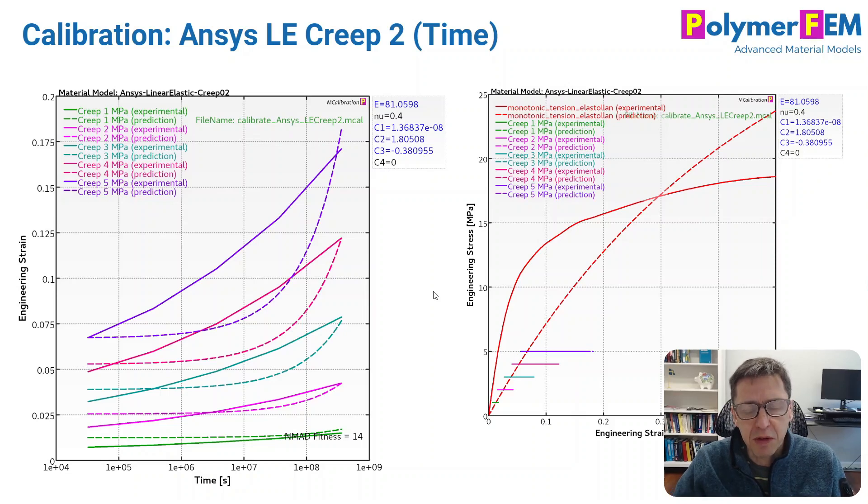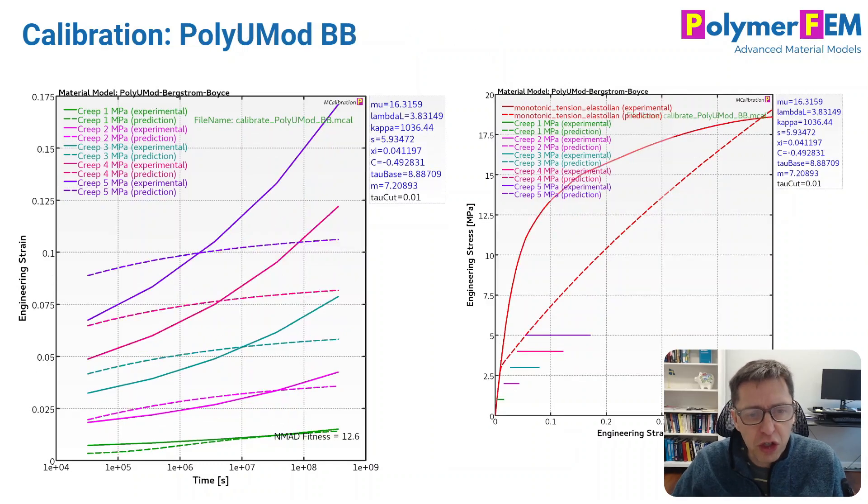The other creep model that sometimes people use is a time-based creep model. I don't like those so much, but if you apply it in this case, it doesn't work that well either. I haven't been able to match the data that well for the creep domain, and the stress-strain data looks pretty much the same as the strain-based model. Average error is again 16%. Not so good.